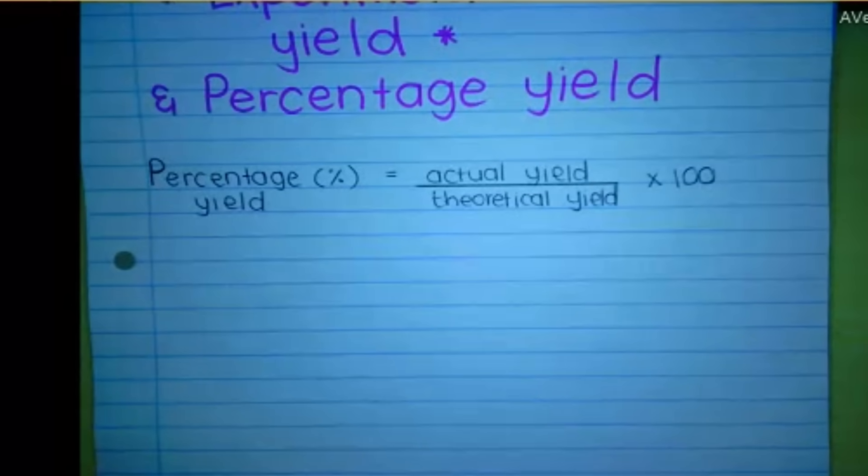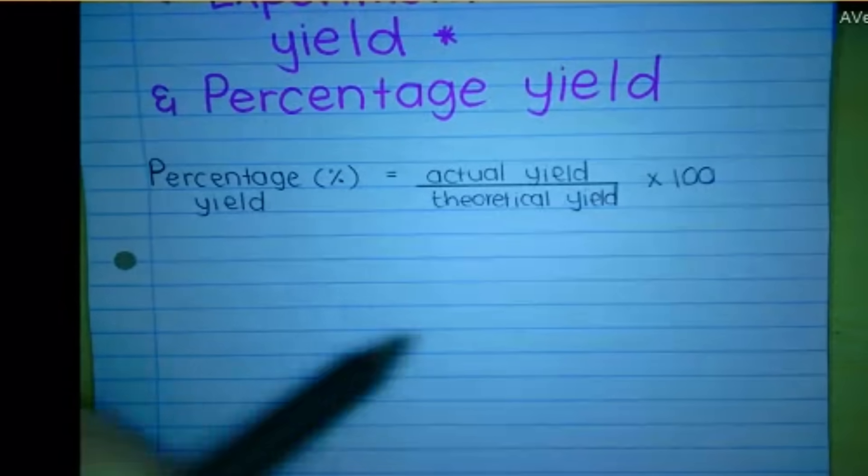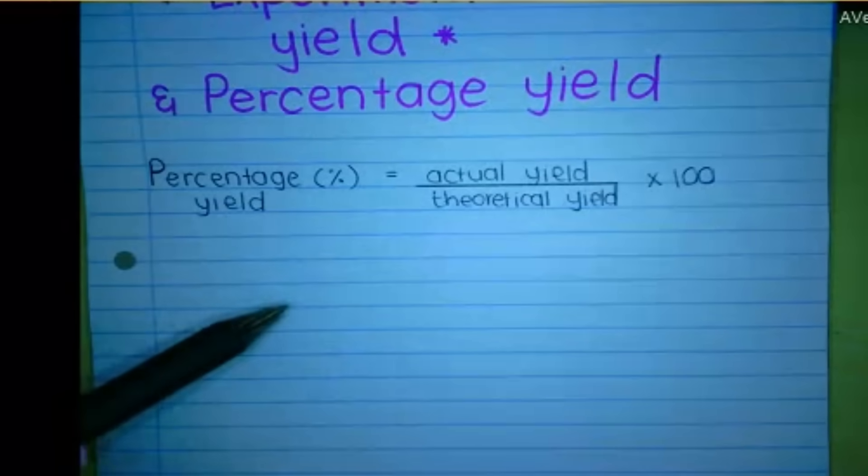Or maybe there might be impurities in the sample. So what impurities are, it's basically, it differs from the chemical composition of the compound. So sodium hydroxide, it won't be sodium hydroxide, it'll be something else. So impurities. Okay, I'm sure you guys understand what that is. So this is our formula to work out percentage yield.